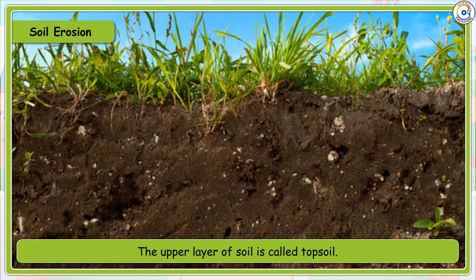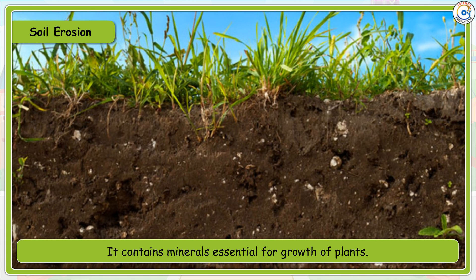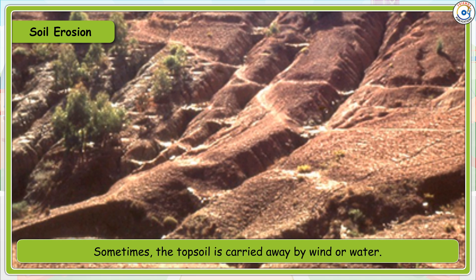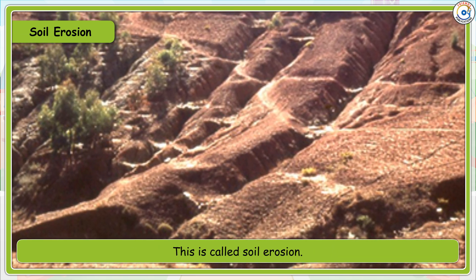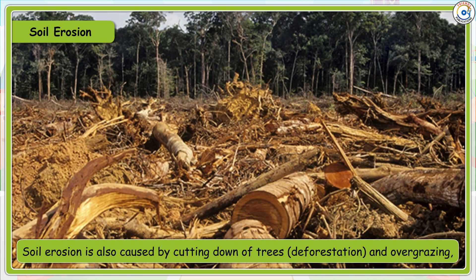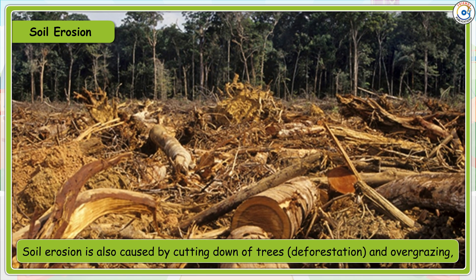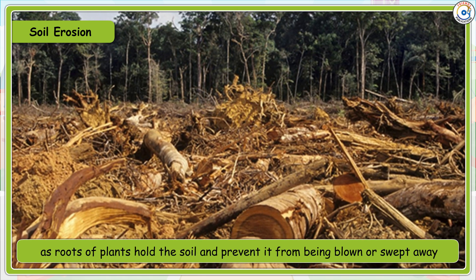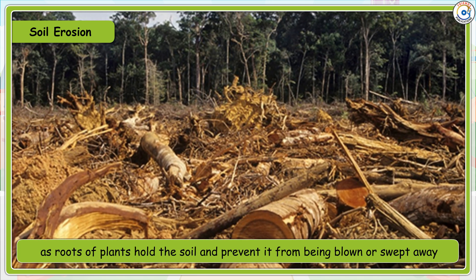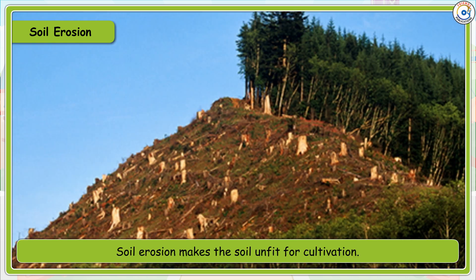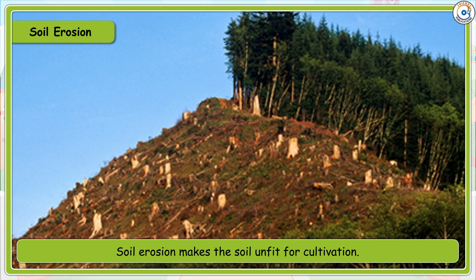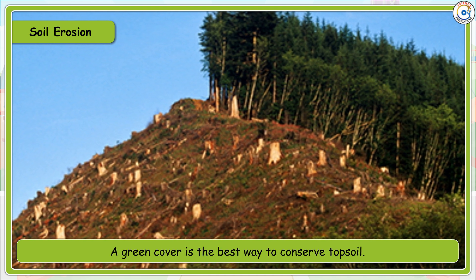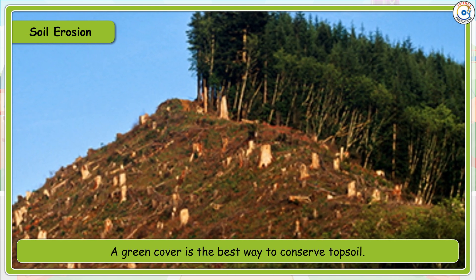The upper layer of soil is called topsoil. It contains minerals essential for the growth of plants. Sometimes the topsoil is carried away by wind or water — this is called soil erosion. Soil erosion is also caused by cutting down of trees, deforestation, and overgrazing, as roots of plants hold the soil and prevent it from being blown or swept away. Soil erosion makes soil unfit for cultivation and causes desertification and landslides. A green cover is the best way to conserve topsoil.